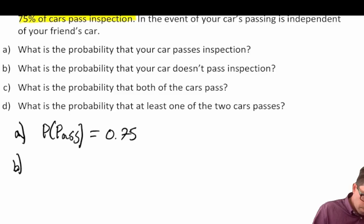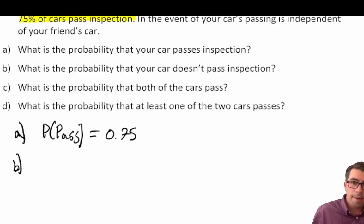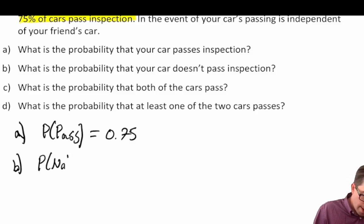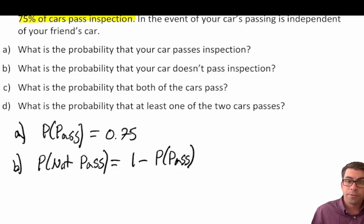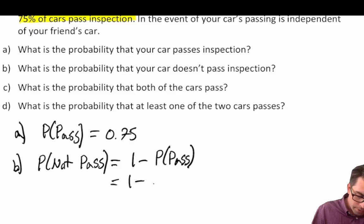For part B, what is the probability that our car does not pass inspection? The probability of not passing equals 1 minus the probability of passing. They are complements of each other — assuming you can either pass or fail with nothing in between. So this equals 1 minus 0.75, which equals 0.25.